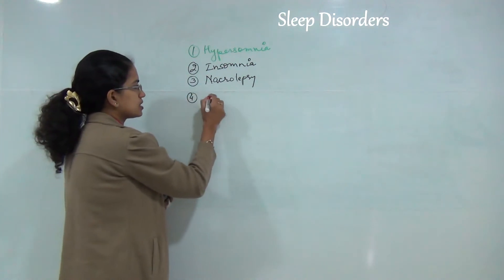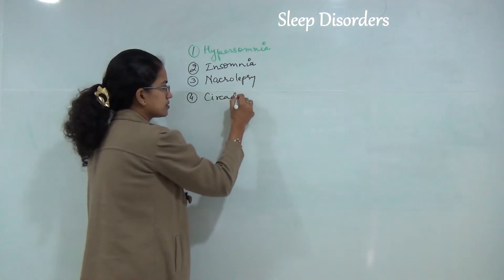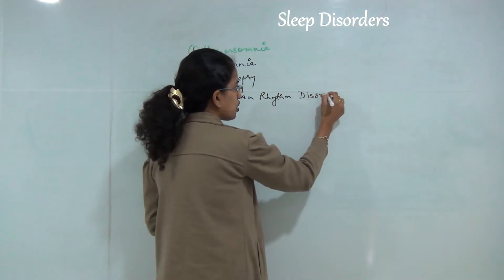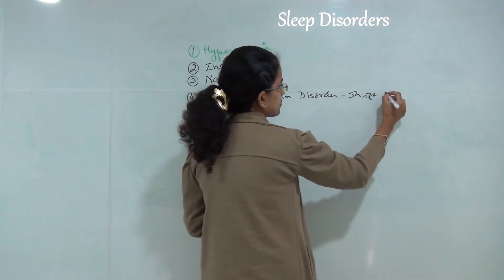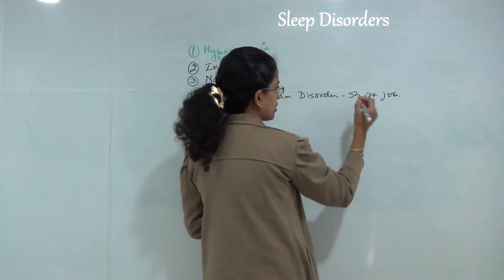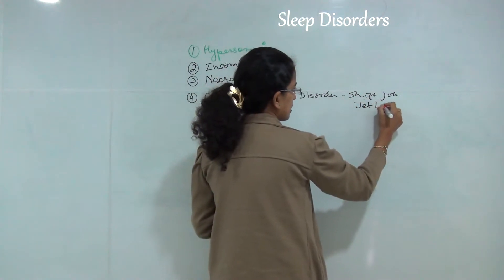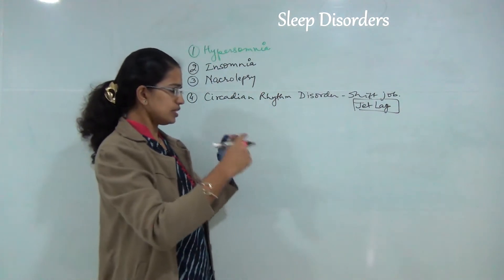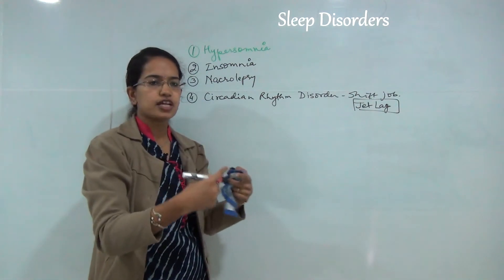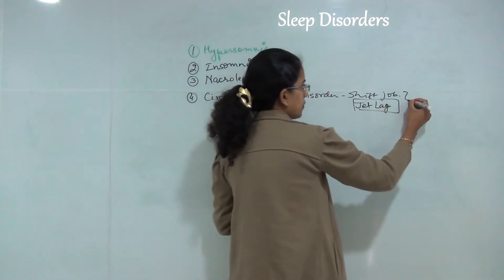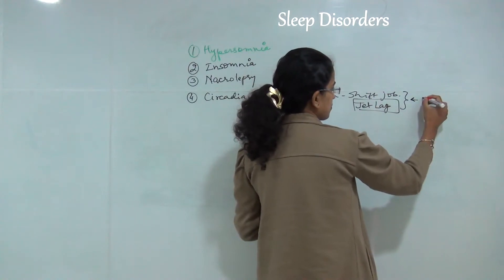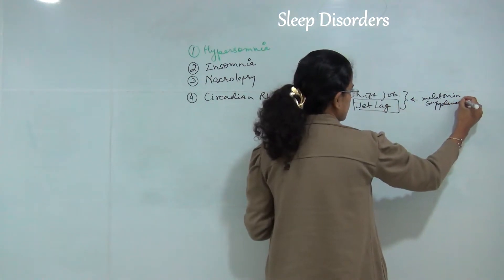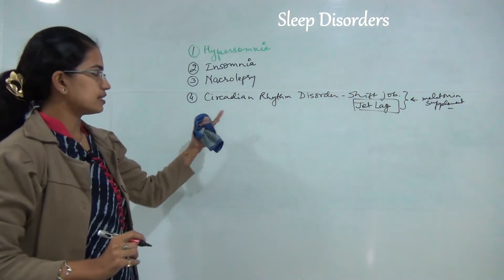Next is circadian rhythm disorders. This is commonly seen in people who do shift jobs or are involved in frequent traveling, and they have a phenomenon known as jet lag. As a result, there is change in the day-night cycle or the sleep-wake cycle. These are controlled by giving extra doses of melatonin or melatonin supplements if these cases appear to be severe.